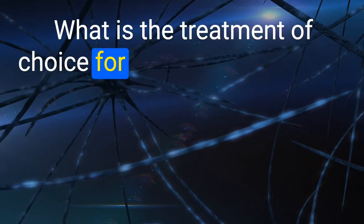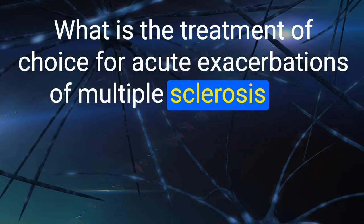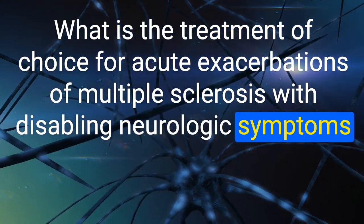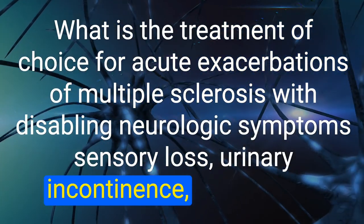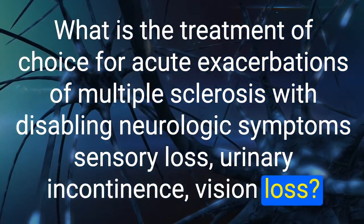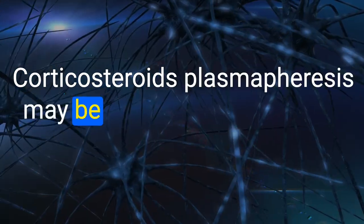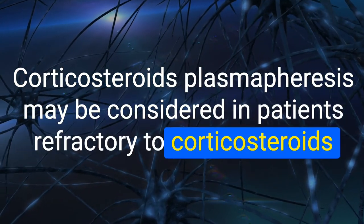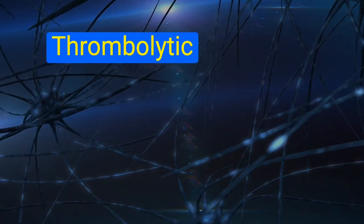59. What is the treatment of choice for acute exacerbations of multiple sclerosis with disabling neurologic symptoms (sensory loss, urinary incontinence, vision loss)? Corticosteroids. Plasmapheresis may be considered in patients refractory to corticosteroids.